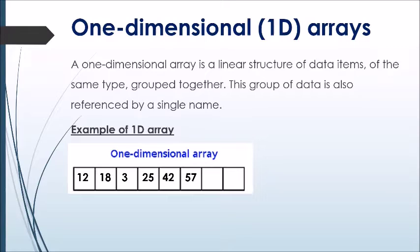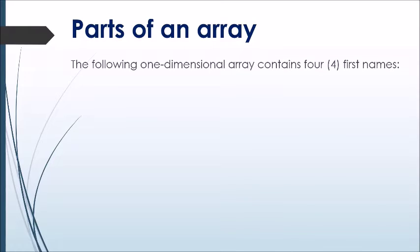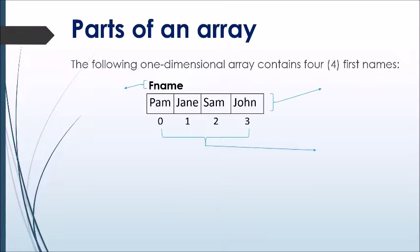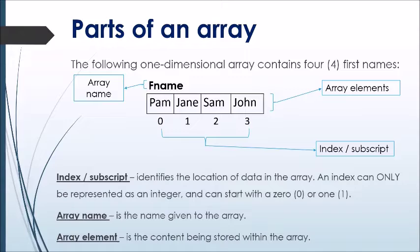This group of data is referenced by a single name referred to as the array's name. The following one-dimensional array shows an array with the capacity to store eight values. Items are placed in an array starting from the left and then move to the right with each entry. The array name 'fName' is used to identify the array being referenced. Array elements are the data items stored within the array. The index or subscript identifies the location of data stored in the array, and can only be represented as an integer value beginning with zero or one.